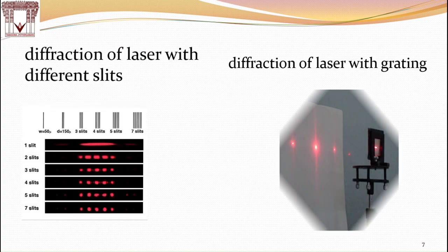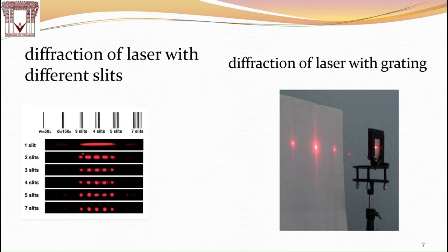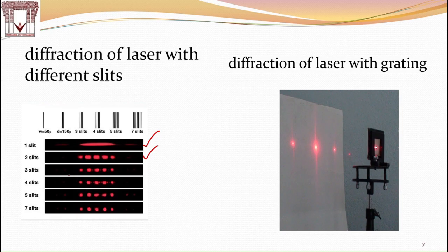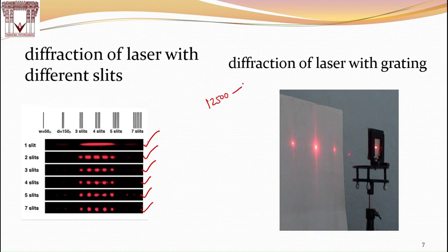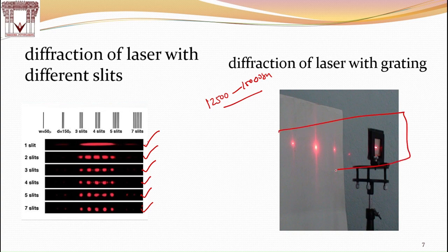And if I take a laser with different slits, if I put one slit and laser passes through that, this will be the diffraction pattern. If I add one more slit, this is the pattern. If I add one more, see the pattern how it changes. This is for 4 slits, 5 slits and 7 slits here. But if I go to the bigger number like as we said before, 12,500 to 15,000 slits, this will be the pattern and this we are going to perform in the lab.